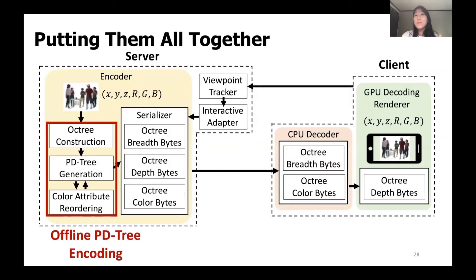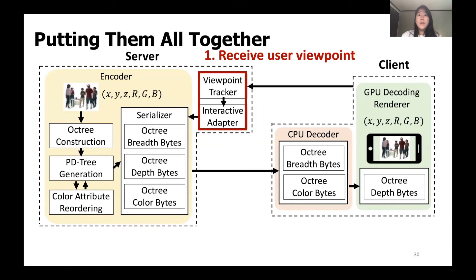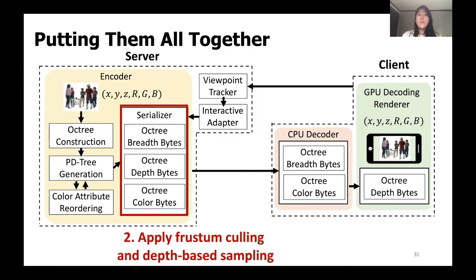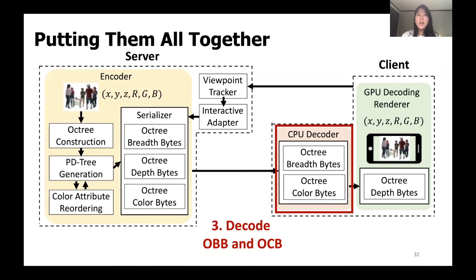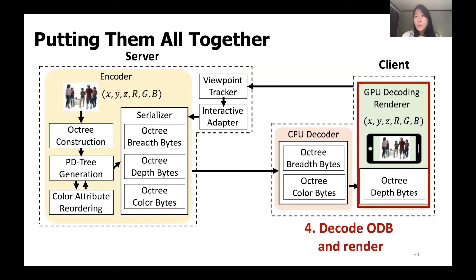When we put all components together, we first generate the PDTree in the offline stage, since this process is not affected by the user's current viewpoint. During runtime, we receive the user's viewpoint and directly apply frustum culling and depth-based sampling in real time and send it to the client. The client device decodes the OctTree breadth bytes and color bytes on the CPU and sends them to the GPU where integrated decoding and rendering happens.